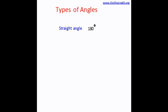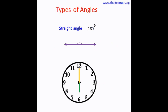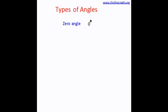The straight angle is an angle that measures 180 degrees, and it would look like a straight line. Both the rays, or both the arms of the angle, are on the same line. The example would be the hands of a clock at 6 o'clock.